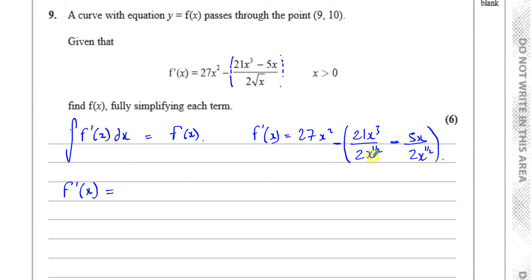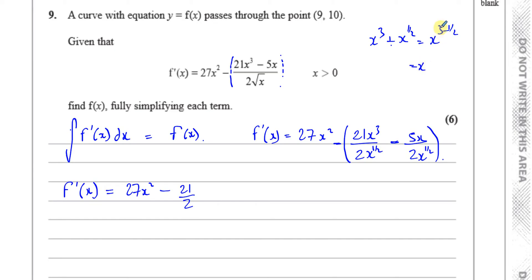Now I combine these into one term. I've got minus 21 over 2, and then x³ divided by x^(1/2) — subtracting the powers gives x^(3 − 1/2) = x^(5/2). Then, minus times minus gives plus, so I have plus 5/2 times x^(1 − 1/2) = x^(1/2). So the expression becomes: 27x² − (21/2)x^(5/2) + (5/2)x^(1/2).